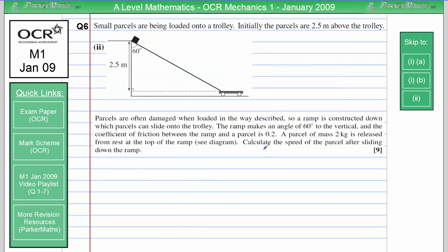In part two, it says parcels are often damaged when loaded in the way described. So a ramp is constructed down which parcels can slide onto the trolley. The ramp makes an angle of 60 degrees to the vertical, and the coefficient of friction between the ramp and the parcel is 0.2. A parcel of mass 2 kilograms is released from rest at the top of the ramp, and we need to calculate the speed of the particle after sliding down the ramp. So a lot of marks available for this question, 9 marks.